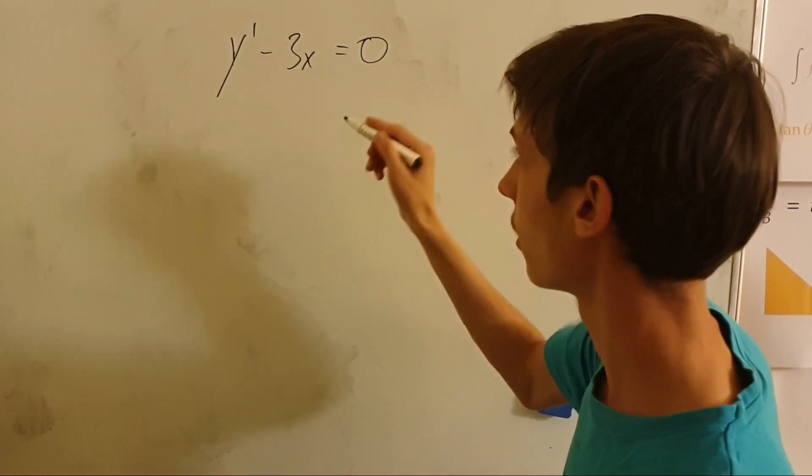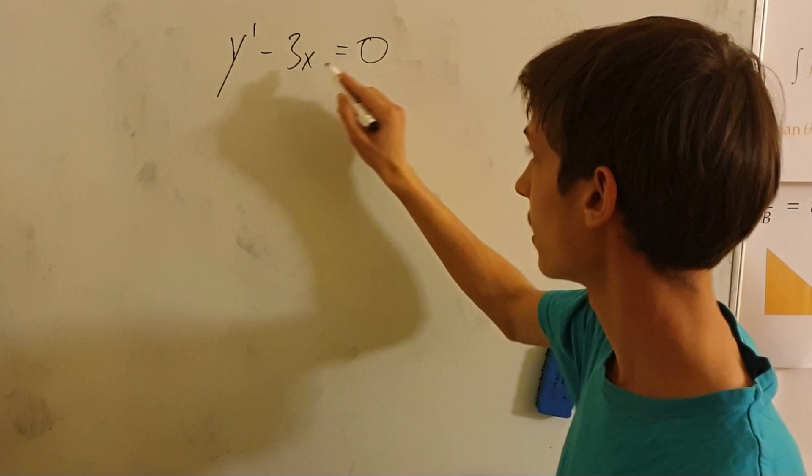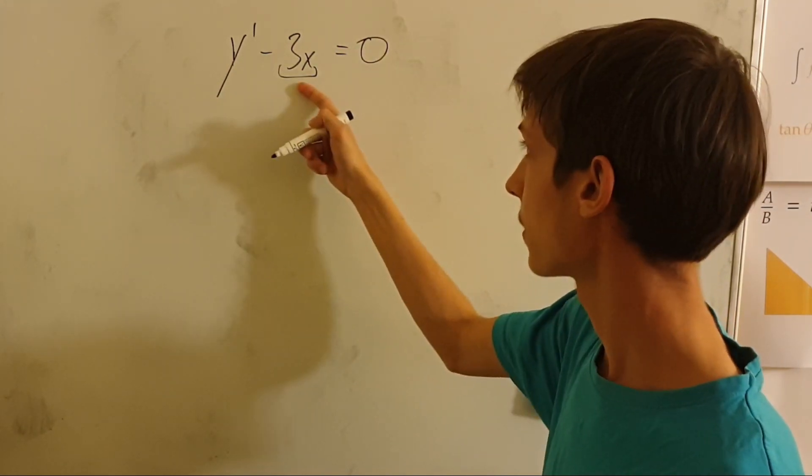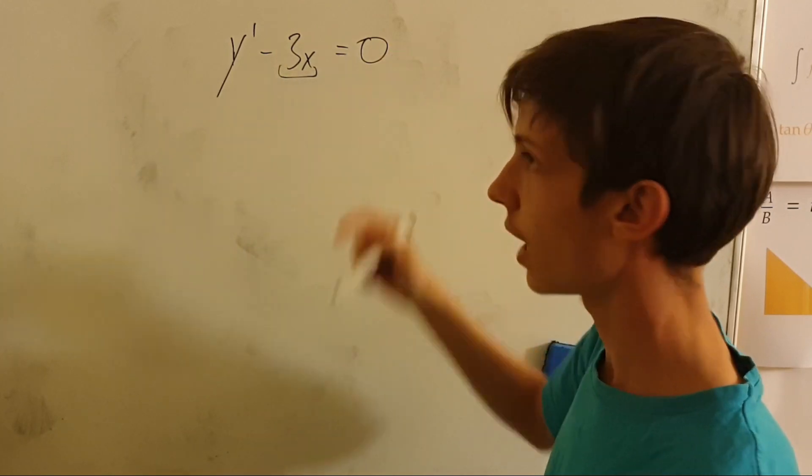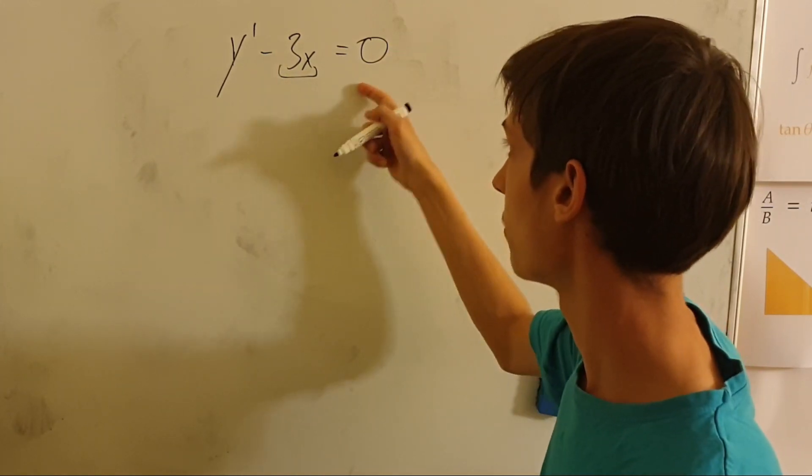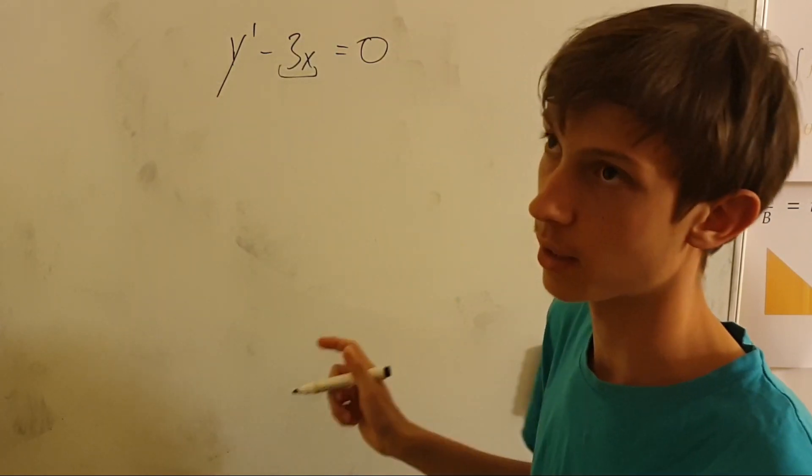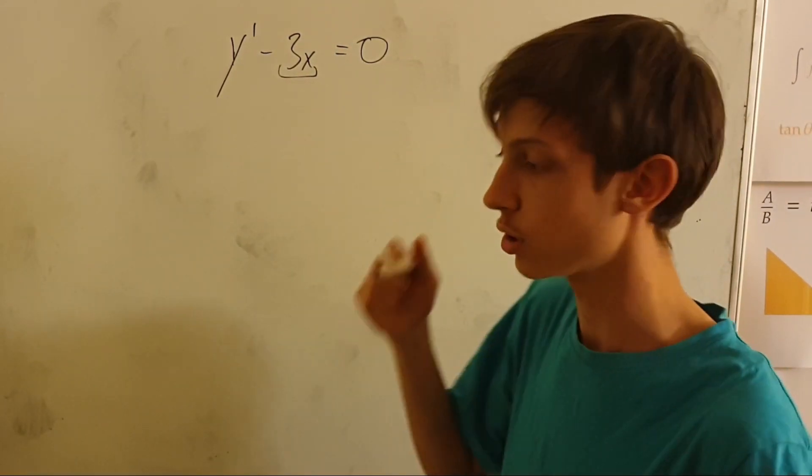Well, the only thing we'll have to do is take this term to the right side by adding it to both sides, getting rid of it on the left side and adding it to the right side, making zero become 3x and minus 3x become zero. Then we can integrate both sides and we'll get what y is, which